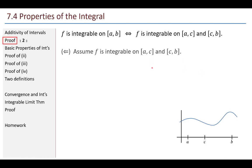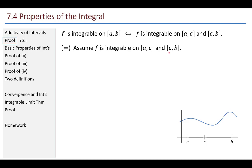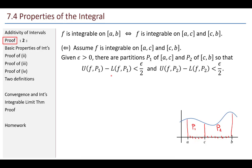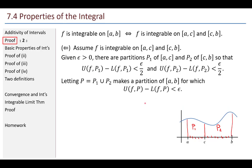Now the other direction: if f is integrable on the two smaller intervals, then it's integrable on all of [a, b]. Given epsilon greater than zero, there are partitions p1 and p2. Since f is integrable on each sub-interval, we can make the upper sum minus lower sum less than epsilon over 2 for each. Letting p be the union of the two partitions gives a partition of [a, b] for which the upper sum minus lower sum is less than epsilon, so f is integrable on [a, b].